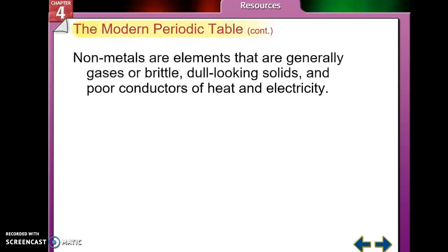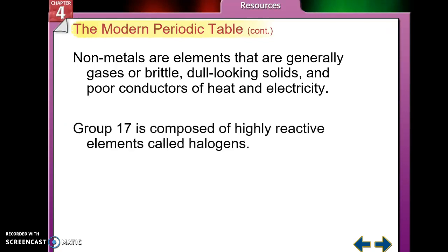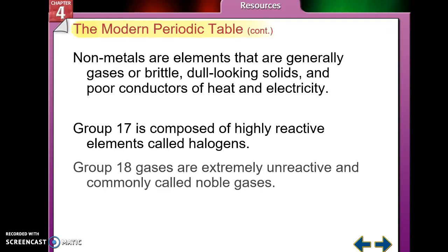Then you get over to the non-metals, which are found in the P block, and they are generally gases or very brittle, dull-looking solids, and they are poor conductors of heat and electricity. Group 17, they are highly reactive elements, and they are called halogens. In group 18, they are gases that are extremely unreactive. These are called noble gases or the inert gases. Helium is a noble gas, neon, argon, krypton, xenon, radon, and oganesson. They're called noble gases because the nobles did not interact with the peasants way back in the day, and they are extremely unreactive.